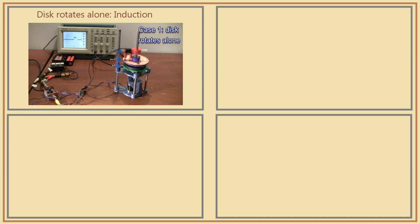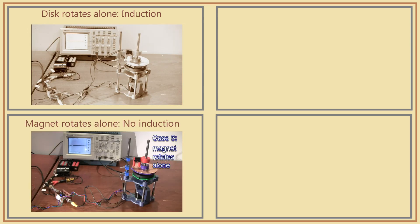In the first video of this series, we demonstrated four scenarios of magnetic conduction with the Faraday disk generator. The first we tried was rotating the disk alone.